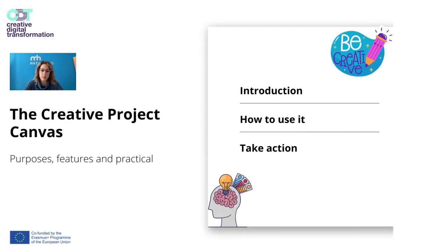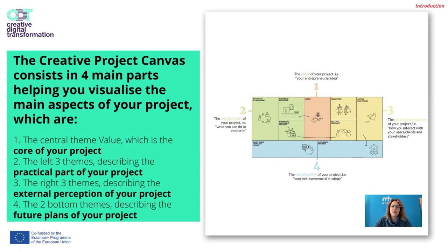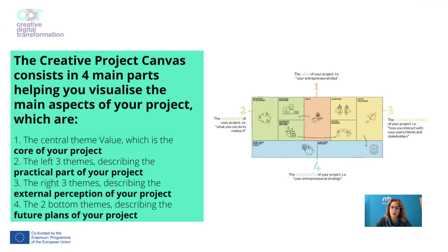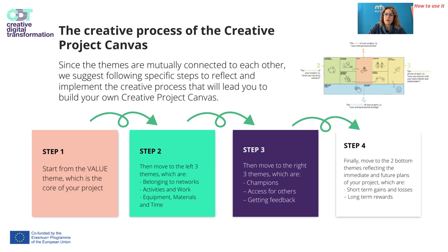Let's explore the purposes, features and practical use of the Creative Project Canvas. It consists of four main parts: the central theme — value — which is the core of your project; the left three themes describing the practical part; the right three themes describing the external perception of your project; and the bottom two themes describing the future plans. Since the themes are mutually connected, we suggest following specific steps to reflect and implement the creative process.